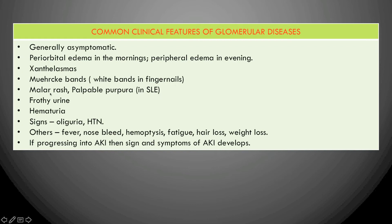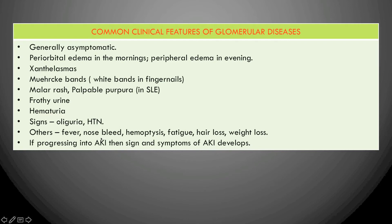Other features include Muehrcke's bands — white bands in the fingernails — malar rash in systemic lupus erythematosus, palpable purpura, frothy urine due to lipiduria and proteinuria, hematuria, oliguria, hypertension, fever, nosebleed, hemoptysis due to fibrinogen leakage, bleeding disorders, fatigue, hair loss, and weight loss. If glomerular disease progresses to rapidly progressive glomerulonephritis, it leads to AKI with its associated signs and symptoms.